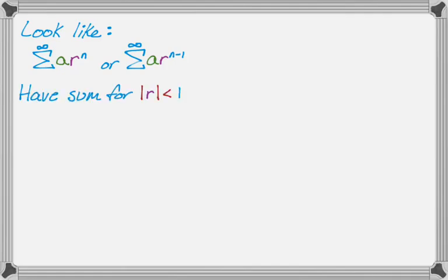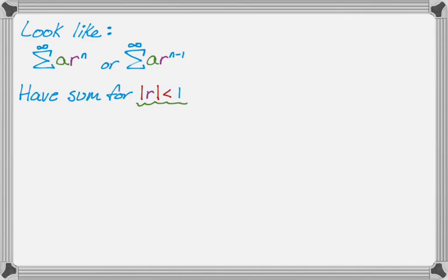These are always going to have a sum as long as the absolute value of R is less than 1. That's a really important idea — you can only get a sum if the absolute value of R is less than 1, because they're going to try to trick you and give you R's whose absolute value is greater than 1. When they do have a sum, they sum up to the first term over 1 minus the ratio. The first term is determined by taking the starting index and plugging it in.